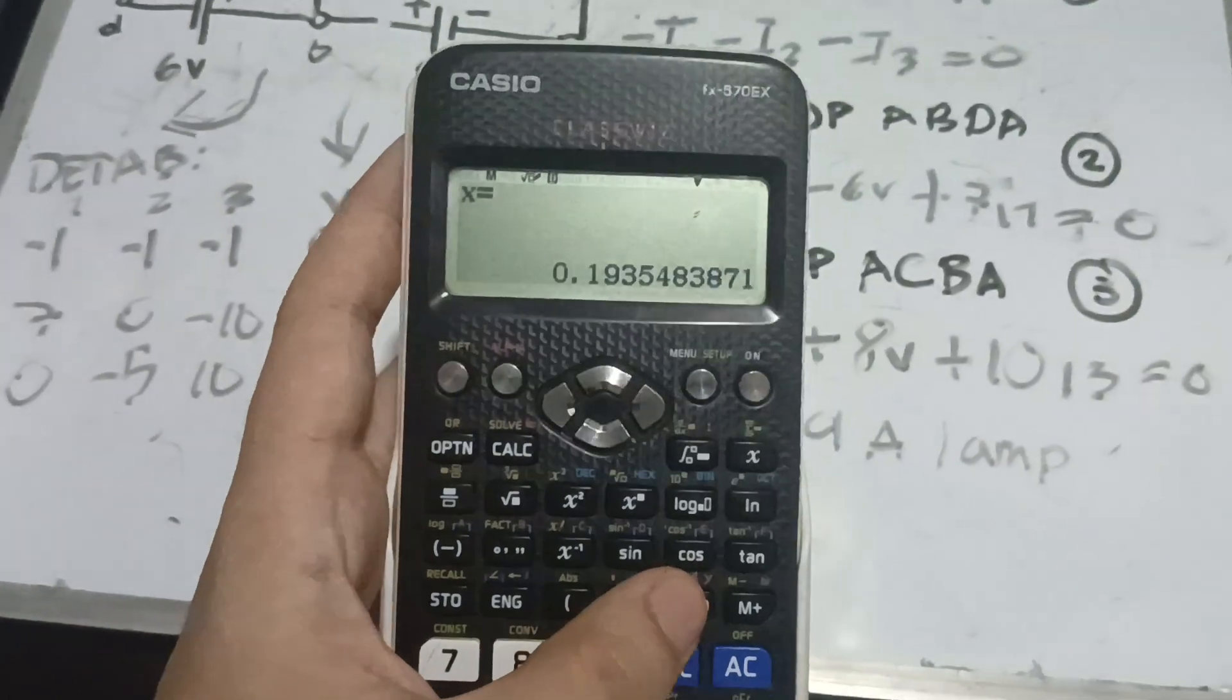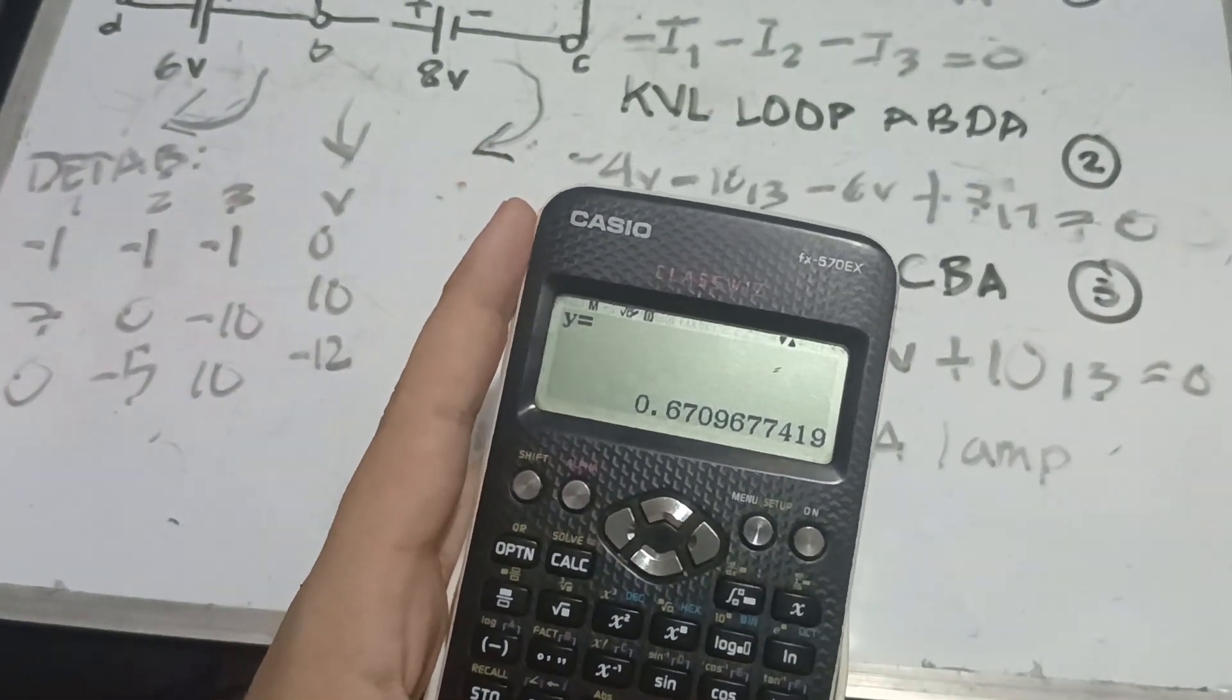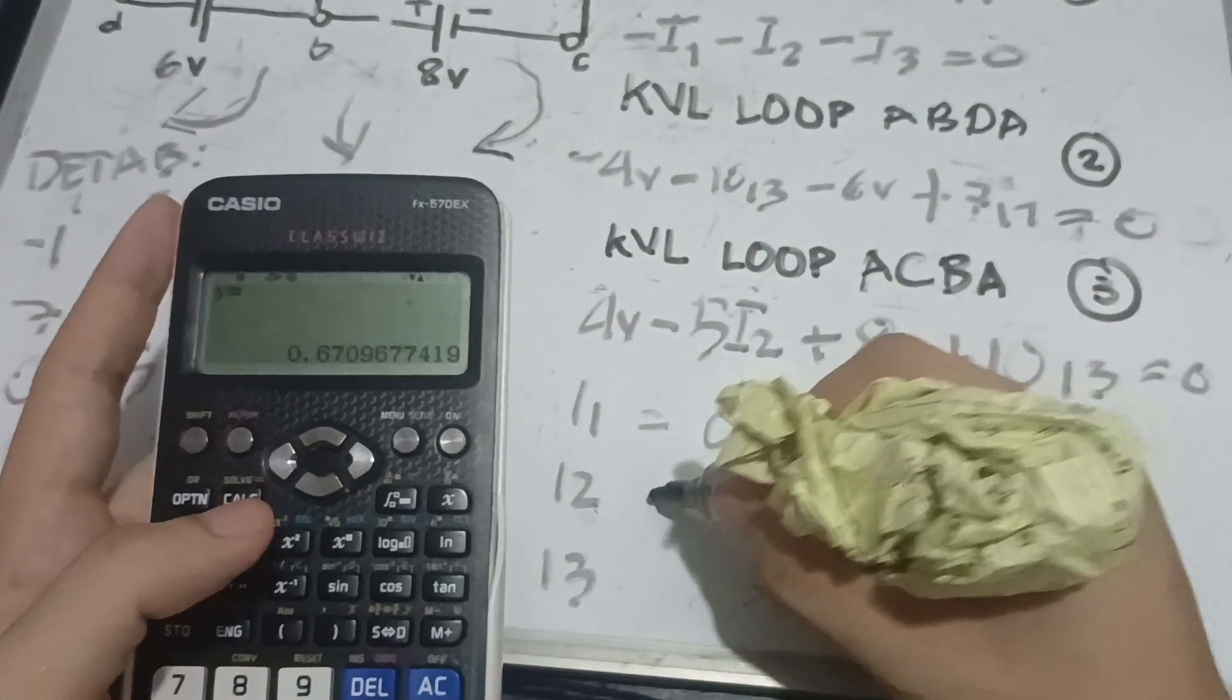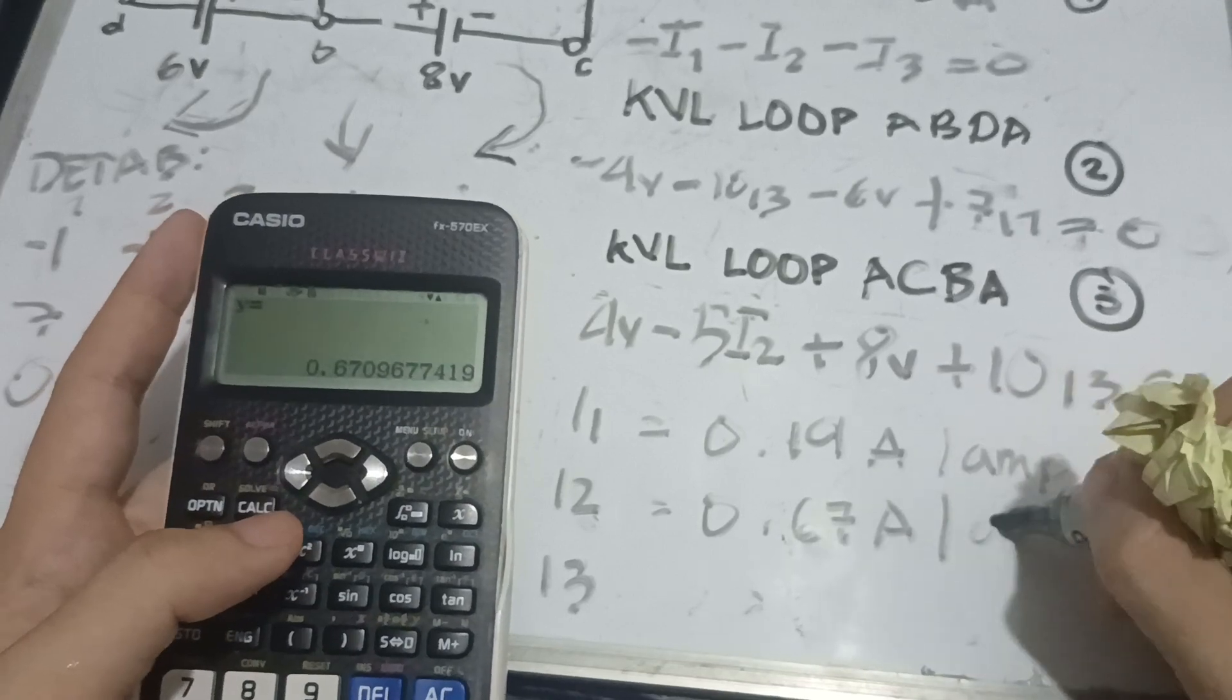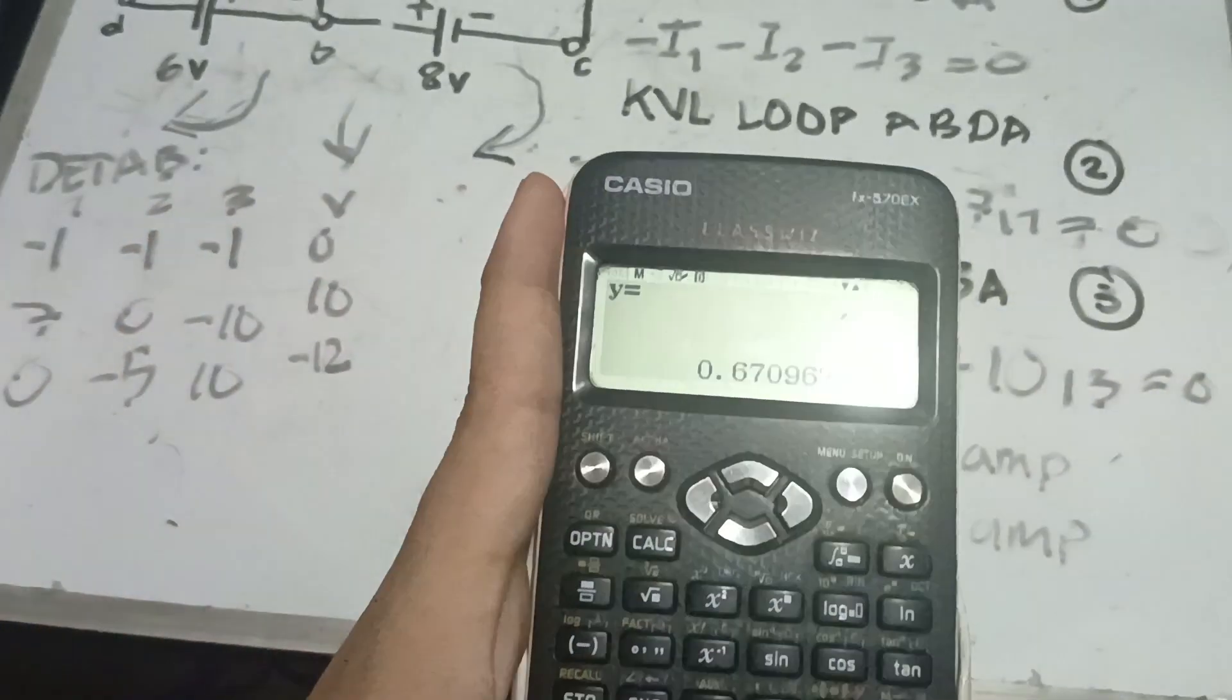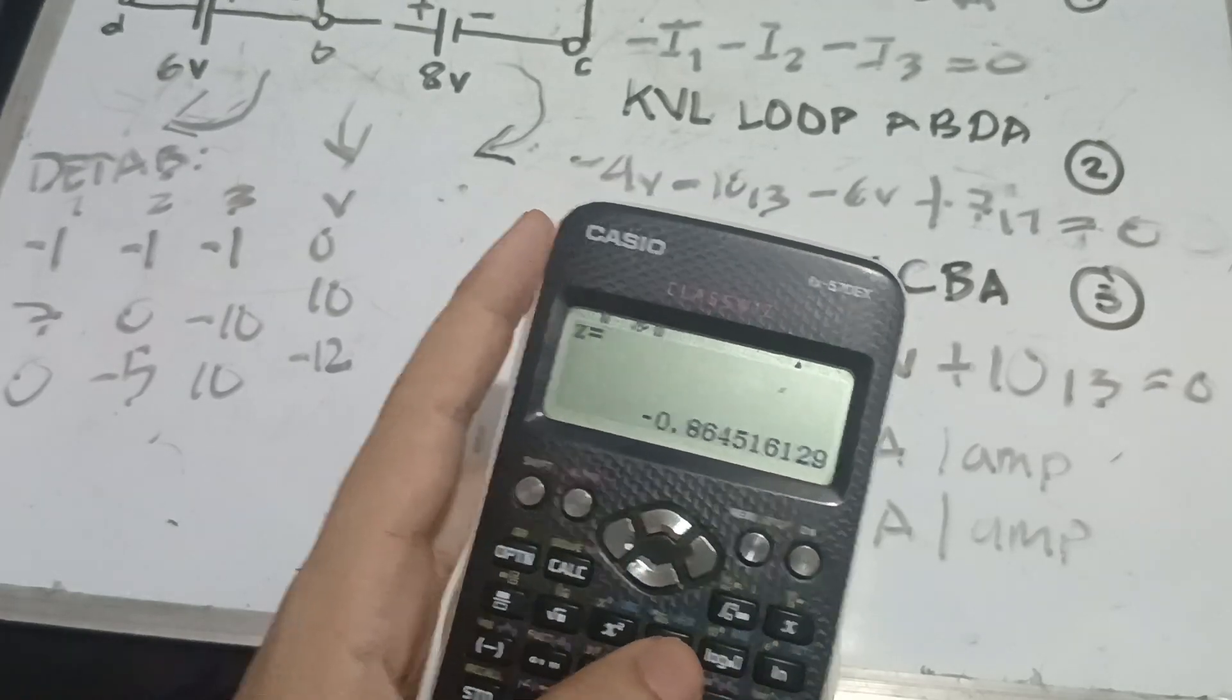Next one. We have here our Y, which is 0.67. Then, we have our last one. Negative 0.86.